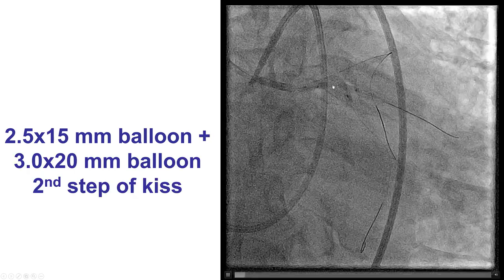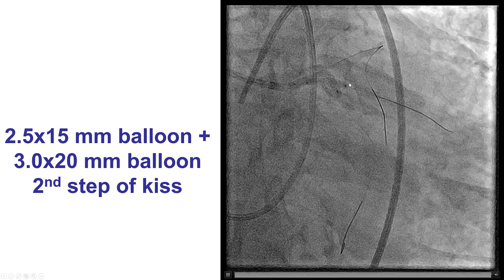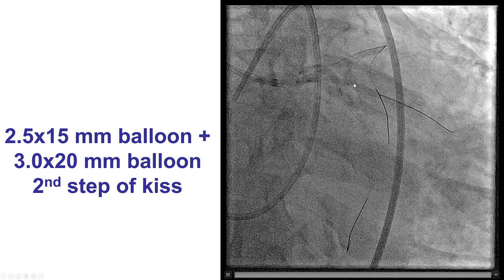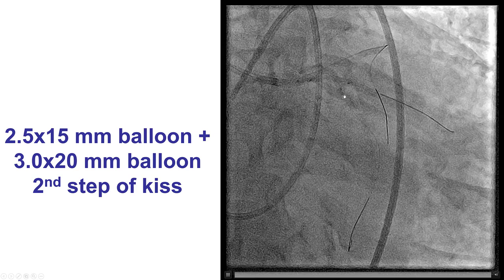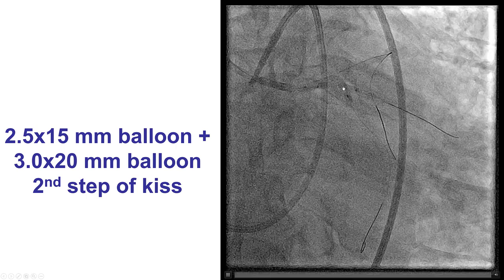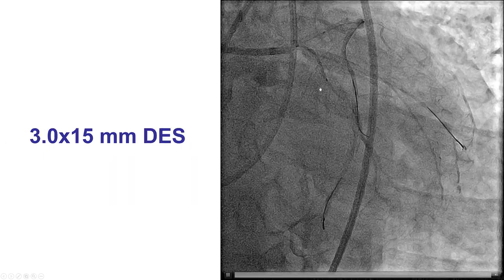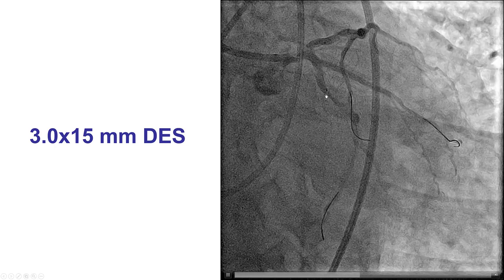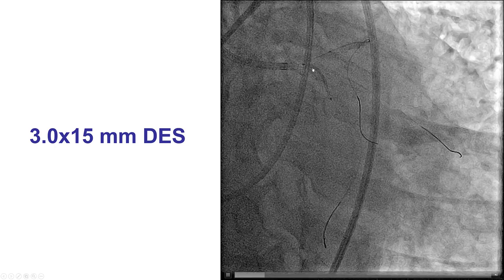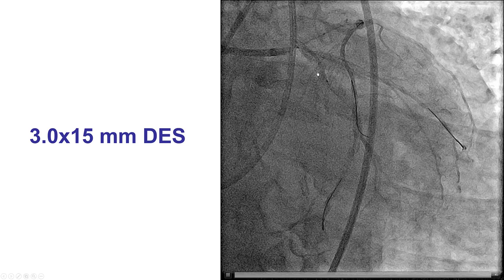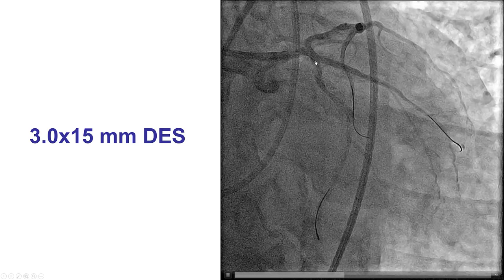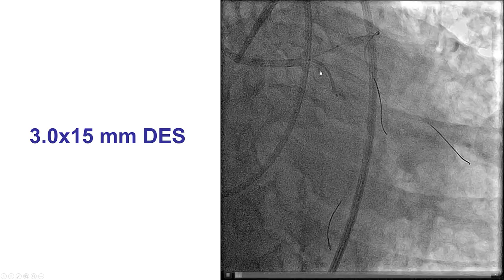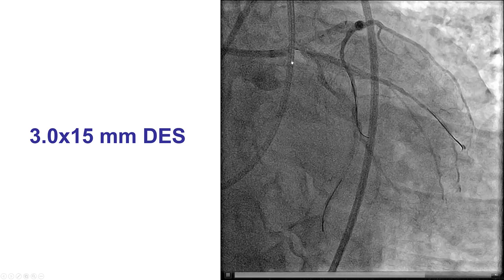We perform two-step kissing inflation: the first step is high pressure inflation on the side branch, the OM1 in this case; the second is lower pressure, usually 12 atmospheres, in both the main vessel (circumflex) and the side branch (obtuse marginal). We then placed a 3×15 mm drug-eluting stent, which was the main vessel stent for the circumflex–OM bifurcation, but the side branch stent for the left main bifurcation.